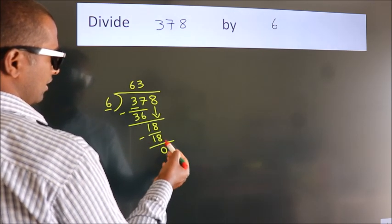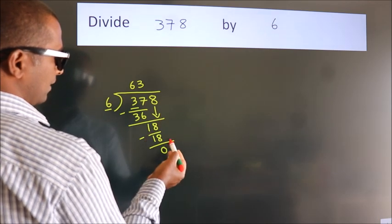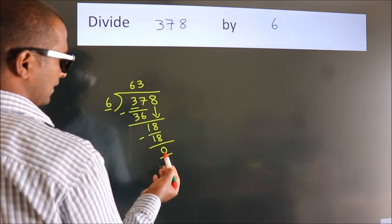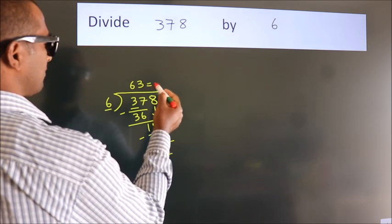After this, no more numbers to bring it down and we got remainder 0. So this is our quotient.